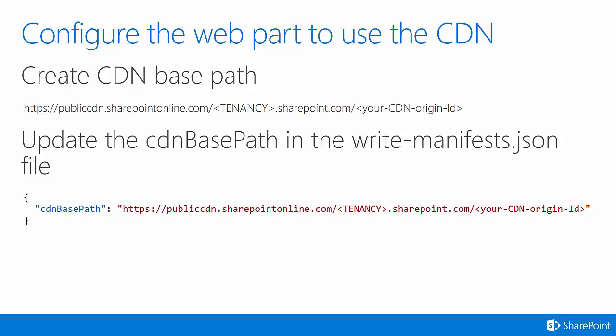Your CDN base path should be https://publiccdn.sharepointonline.com, then the name of your tenancy, your CDN origin ID. Once you have that information, you can then go into your web part code and the write-manifest.json file. That file is generated for you automatically by the Yeoman generator when you make a SharePoint Framework project. Here you can see the CDN base path inside of the write-manifest.json file and where you'll need to update that to make your web part grab its assets from the CDN at runtime.